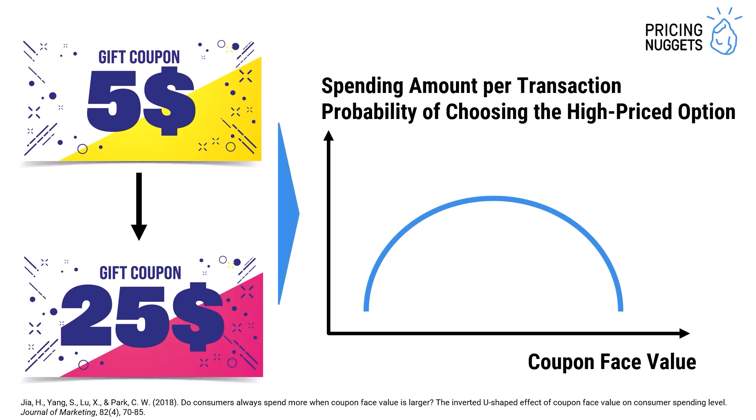This leads to a relationship between coupon face value and spending amount per transaction — or probability of choosing the high-priced option — that follows an inverted U. Meaning, you increase the coupon face value steadily, and at the same time the spending amount per transaction goes up. But after a certain turning point it goes down, because you cross the threshold that customers implicitly have in mind between high and low savings, and now they find that additional savings are more important than a higher budget for spending.